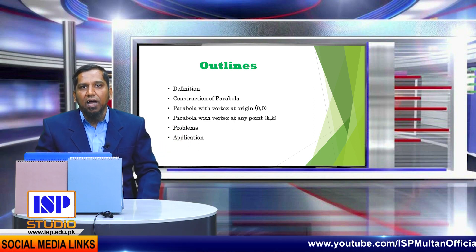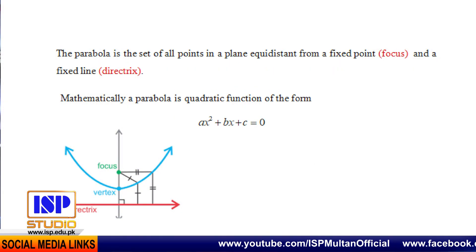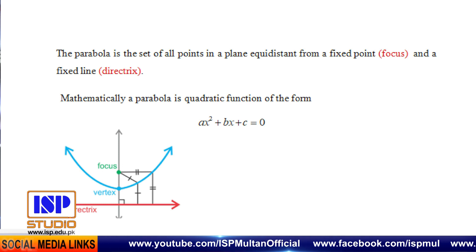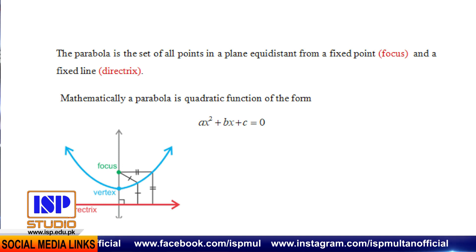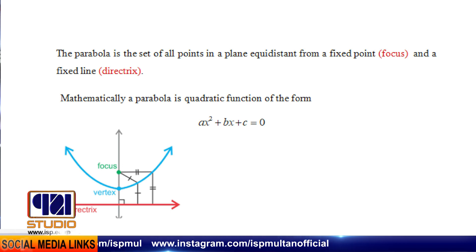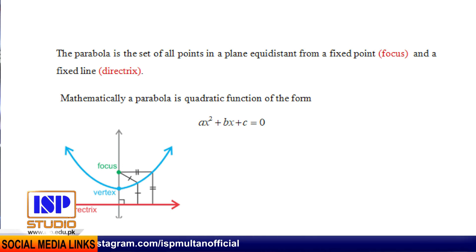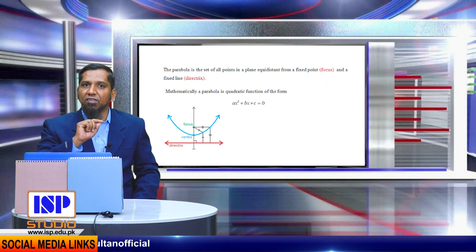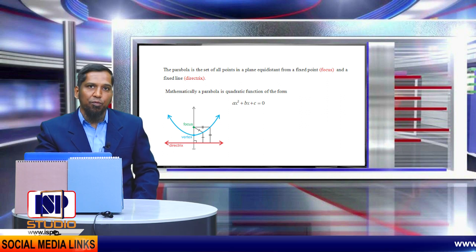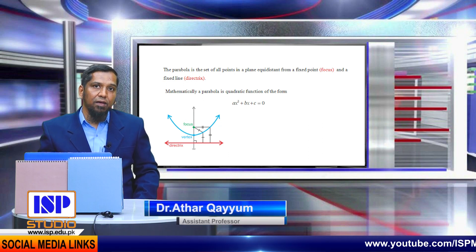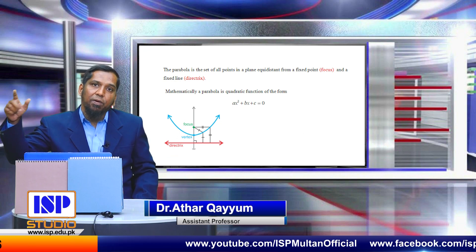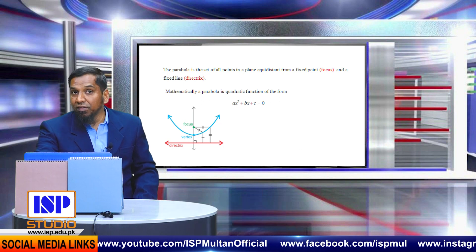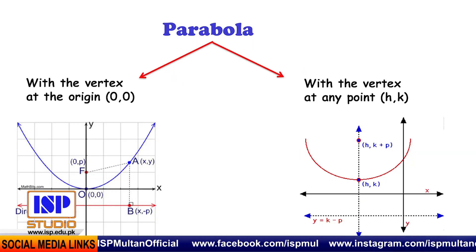In the end I will tell you about the application of parabola in our daily life. Now, what is parabola? It is the set of all points in a plane equidistant from a focus and equidistant from a directrix. The focus is a fixed point and the directrix is a fixed line. Mathematically, parabola is a quadratic function: ax² + bx + c = 0.